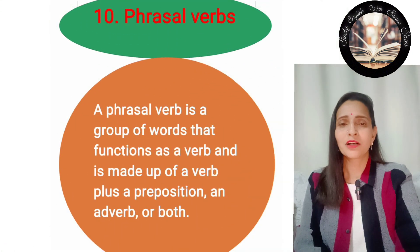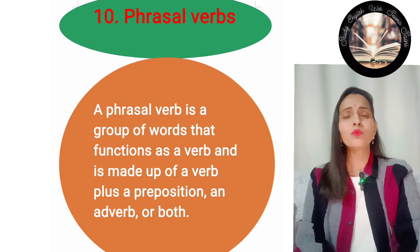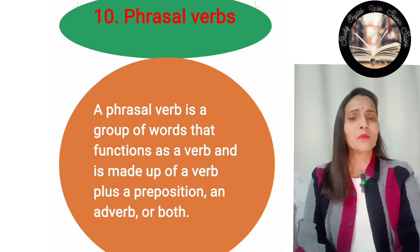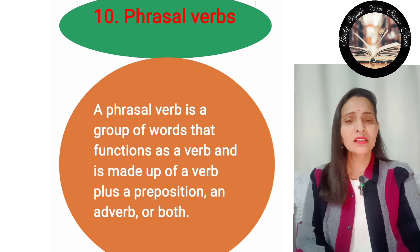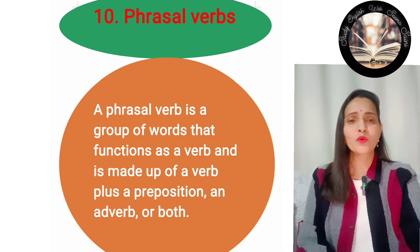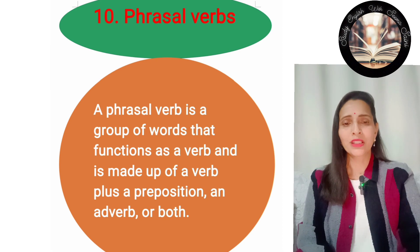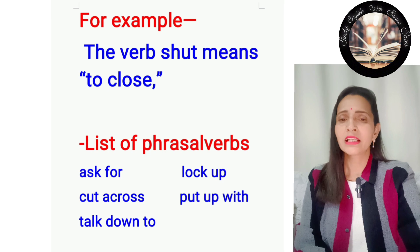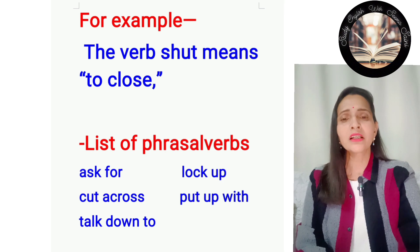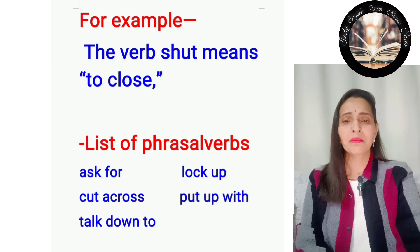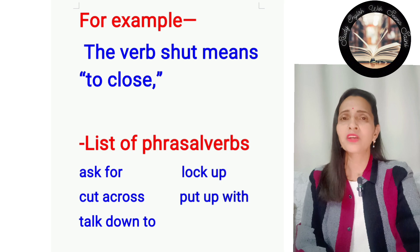Next: phrasal verbs. A phrasal verb is a group of words that functions as a verb, and it is made up of a verb plus a preposition, an adverb, or both. List of phrasal verbs: ask for, lock up, cut across, put up, put up with, talk down to. These are phrasal verbs.